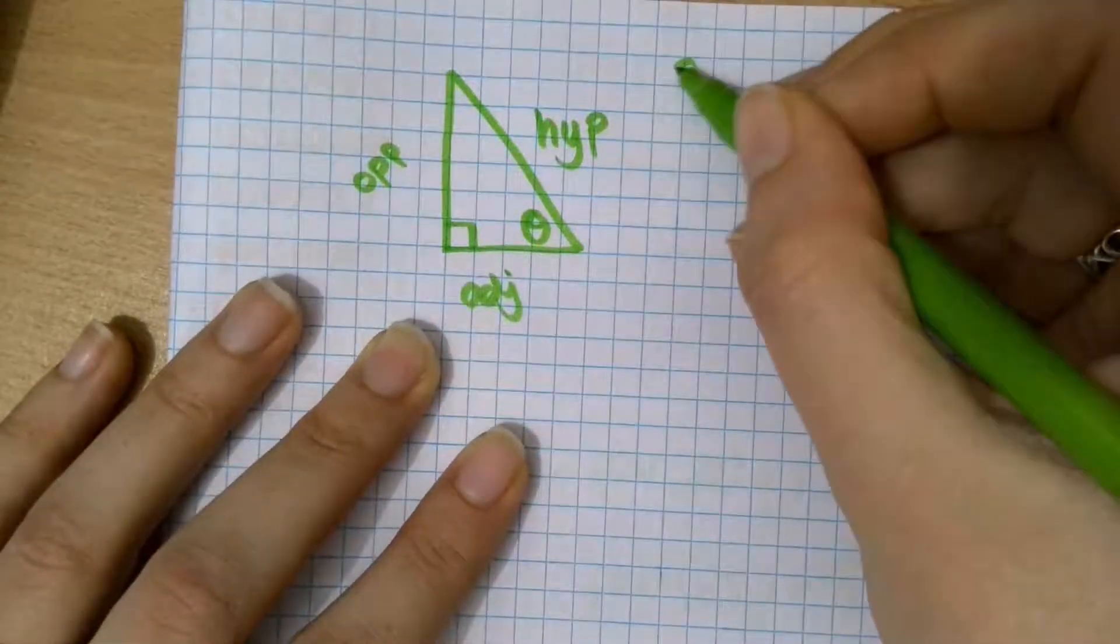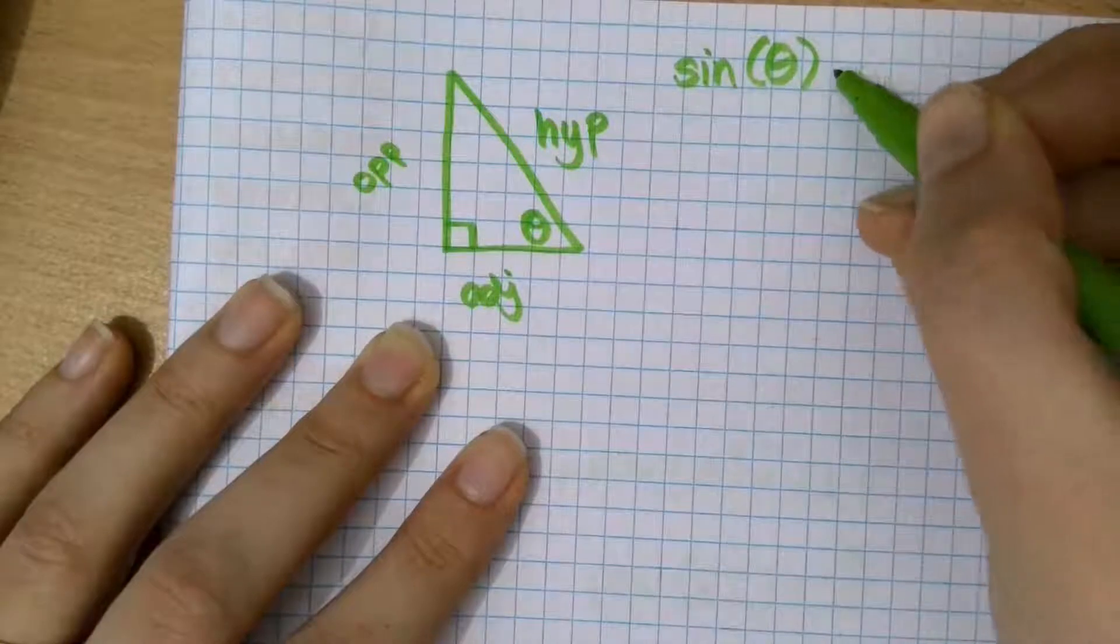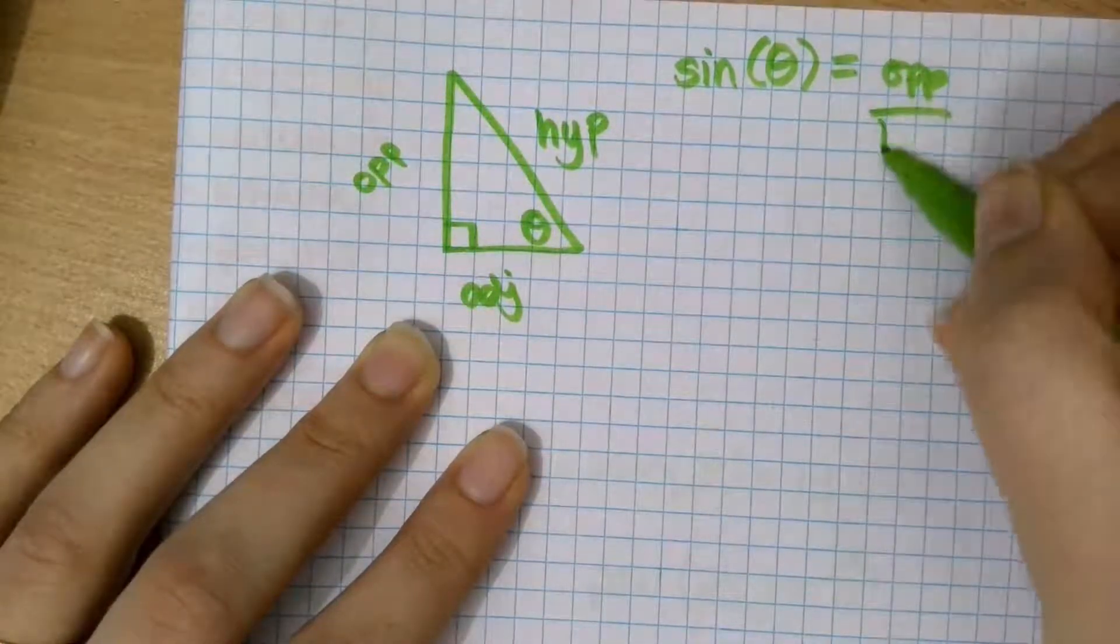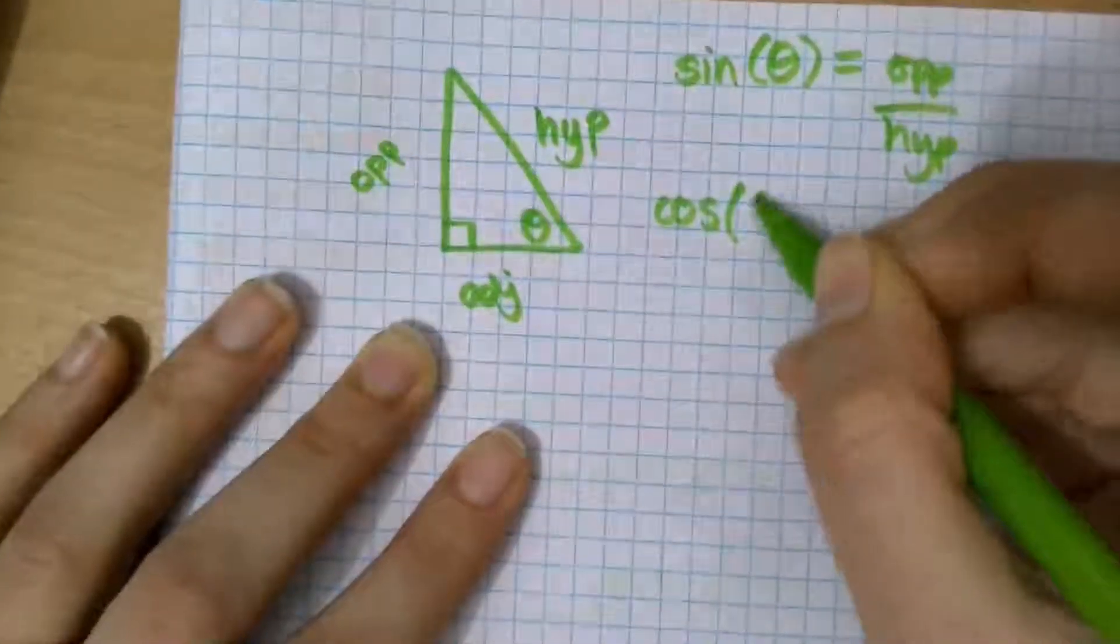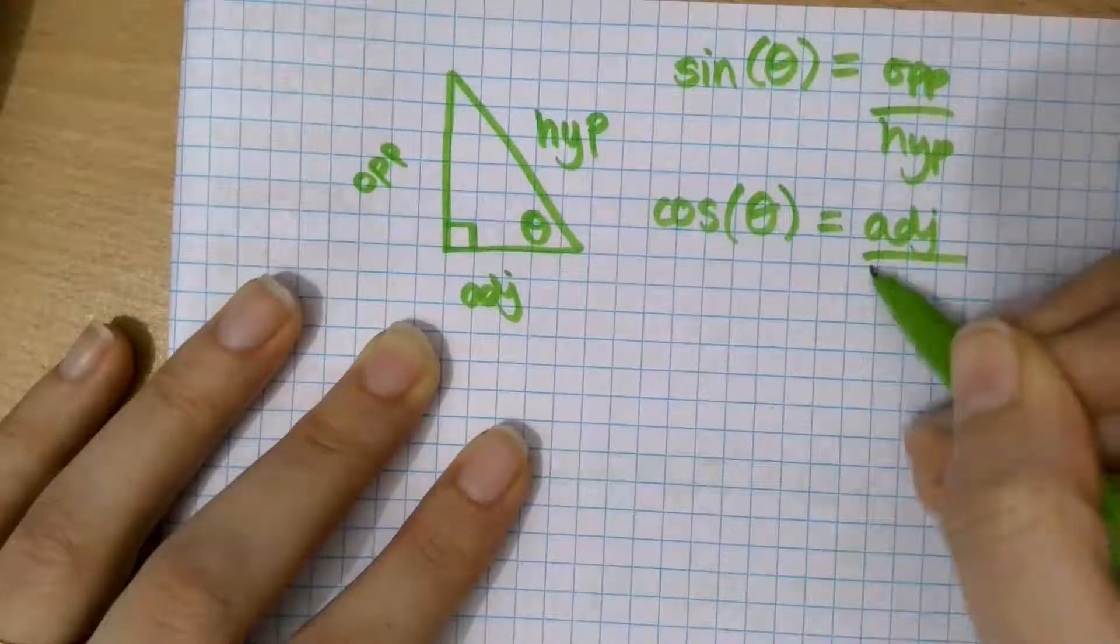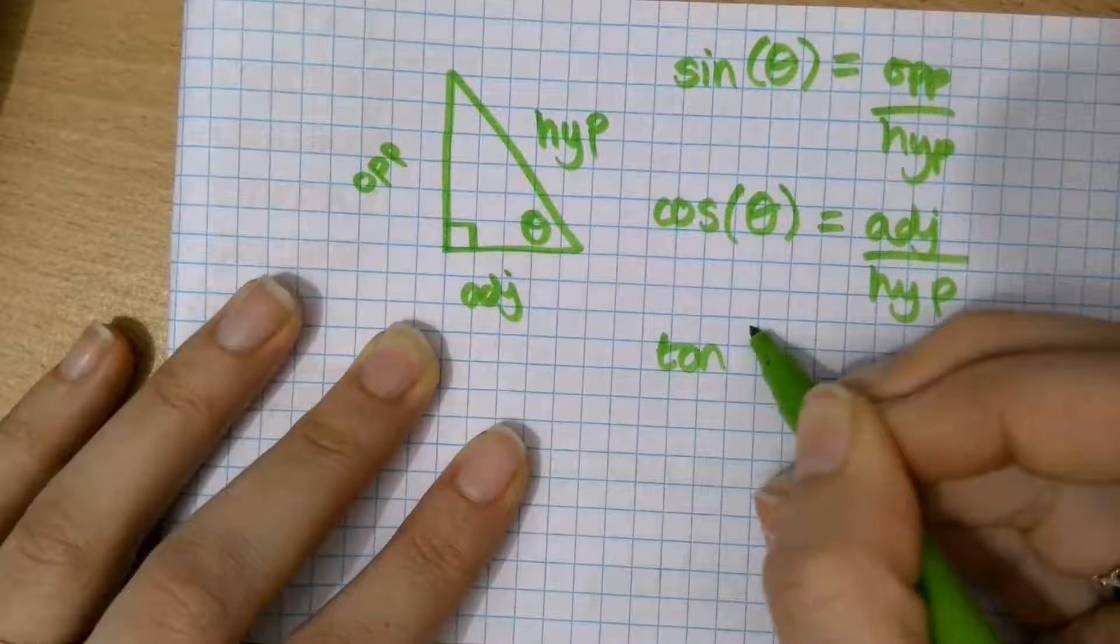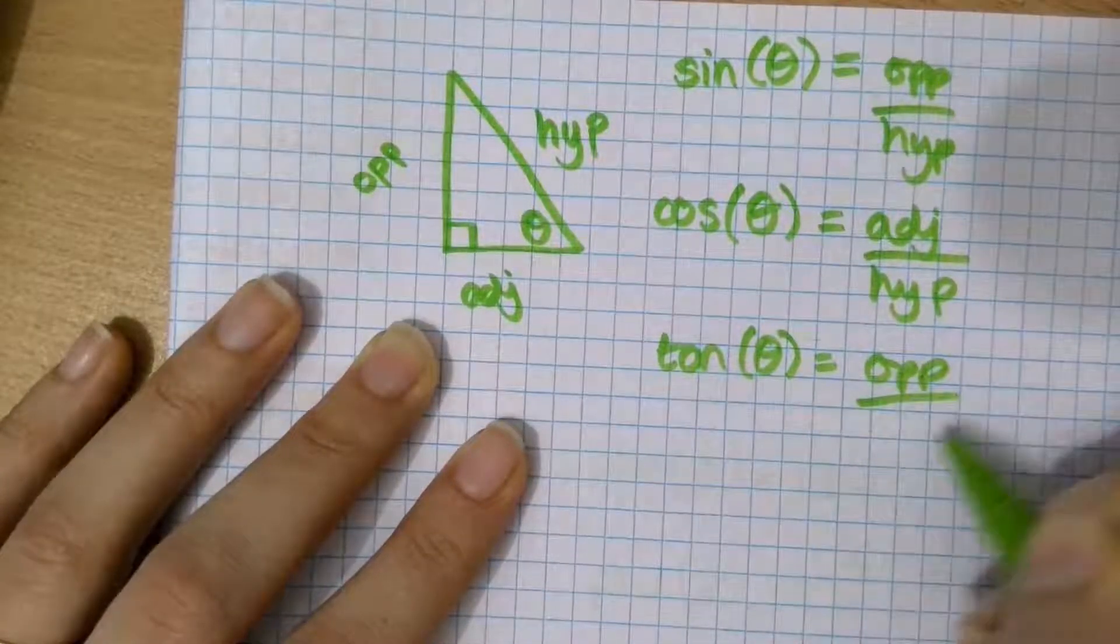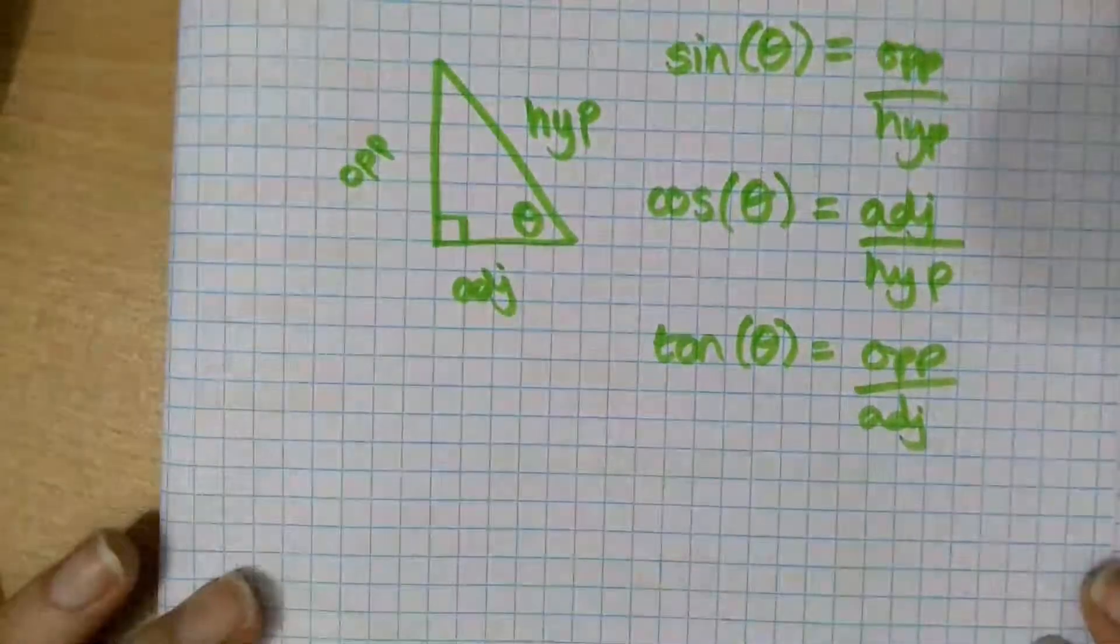The three formulas that you need to remember are sine, which we just shortened to sin, which is the opposite side divided by the hypotenuse side. Cosine, which we just shortened to cos, which is the adjacent side divided by the hypotenuse side. And tangent, which we shortened to tan, which is the opposite side divided by the adjacent side. So these are the three formulas you need to be quite happy with using.